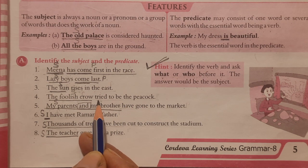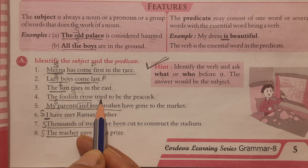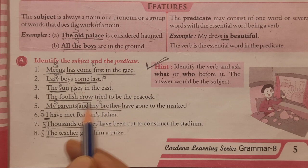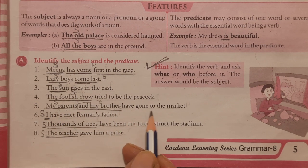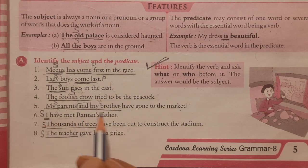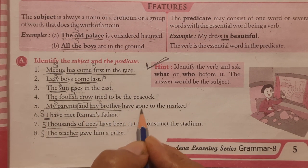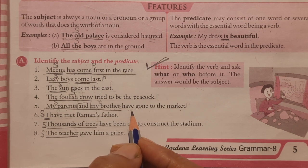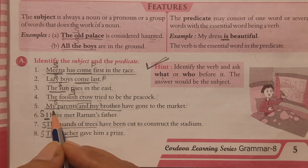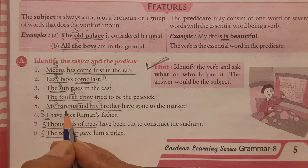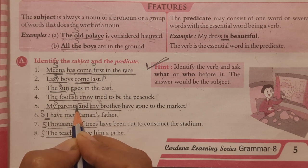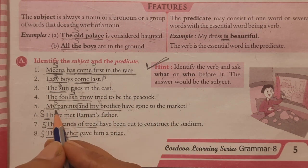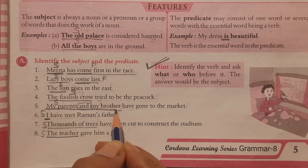'Tried' is the past form of 'try.' We ask: who tried to be the peacock? The foolish crow. So 'the foolish crow' is the subject. Next: 'My parents and my brother have gone to the market.' This is a tricky one because it has a long subject. The verb is 'have gone.' We ask: who have gone to the market? The answer is 'my parents and my brother' — they are joined by the conjunction 'and,' so the whole phrase becomes the subject.